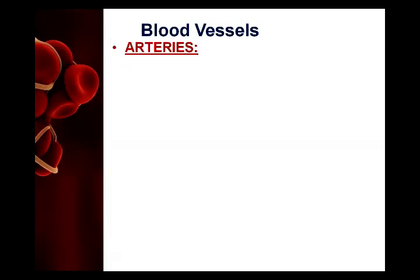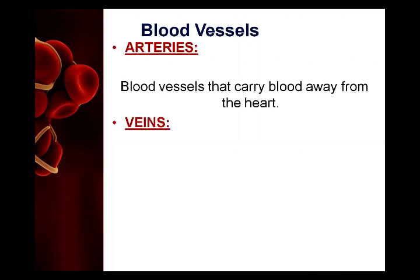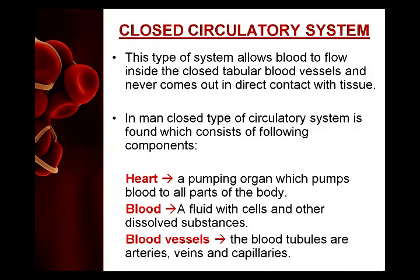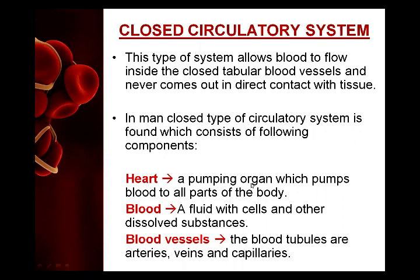Now about the blood: blood is a special kind of connective tissue which circulates in fluid form in the human body. It transports substances and is composed of plasma as well as the cellular part - the corpuscles, which include red blood cells, white blood cells, and platelets.